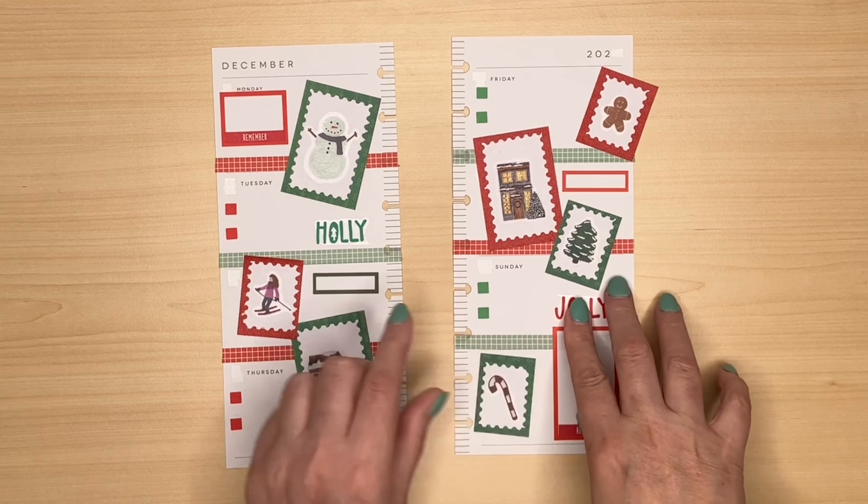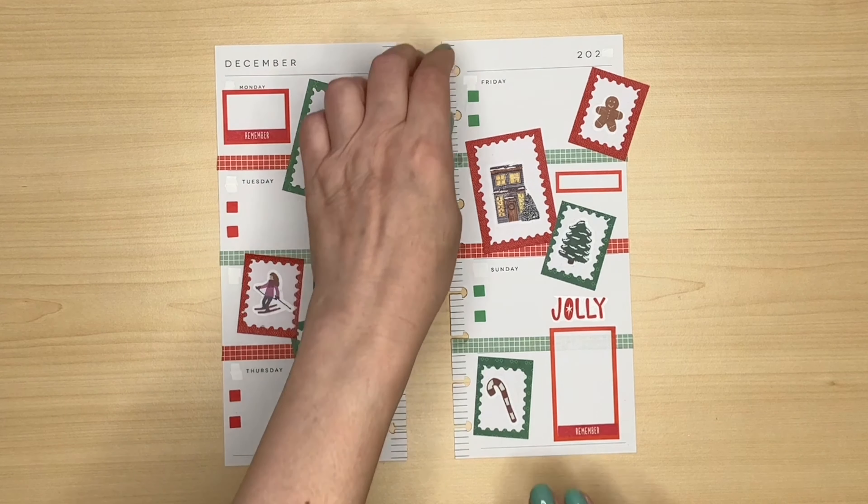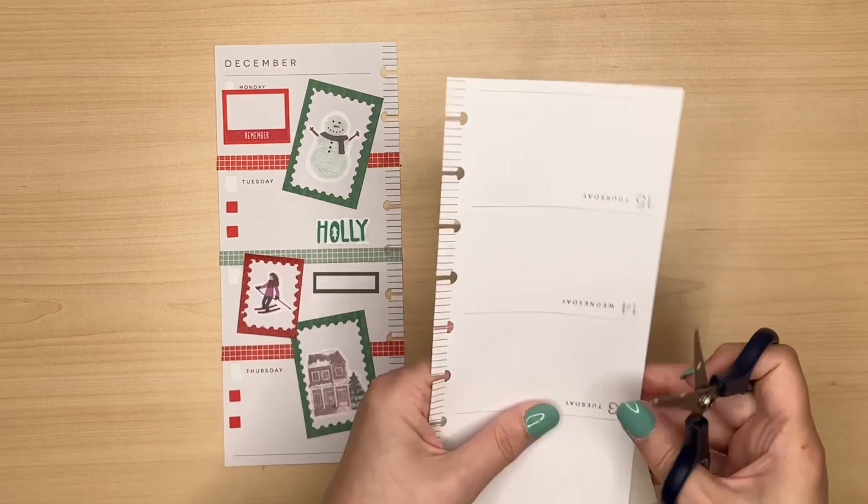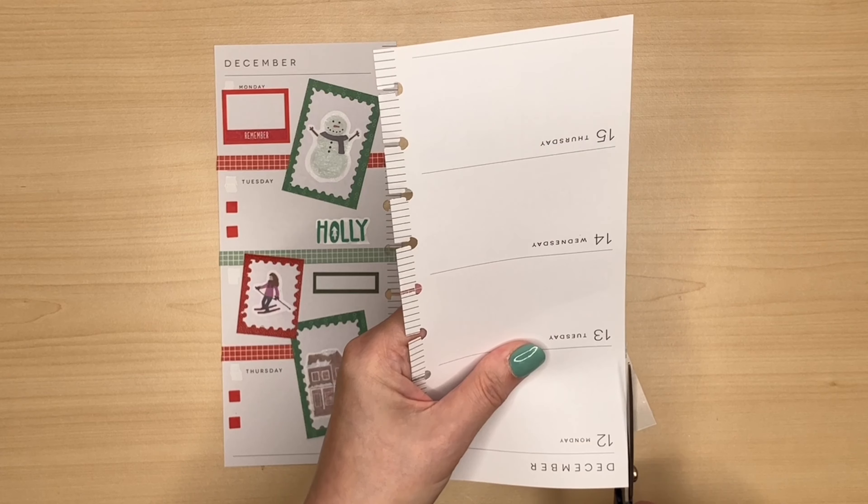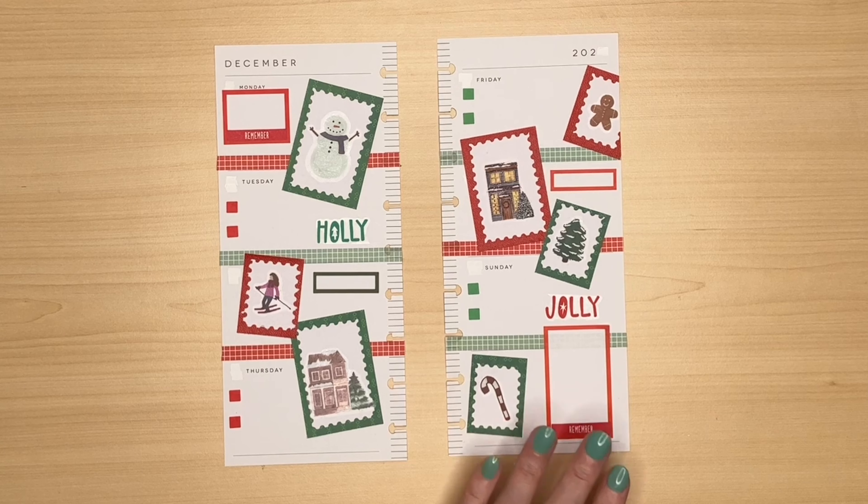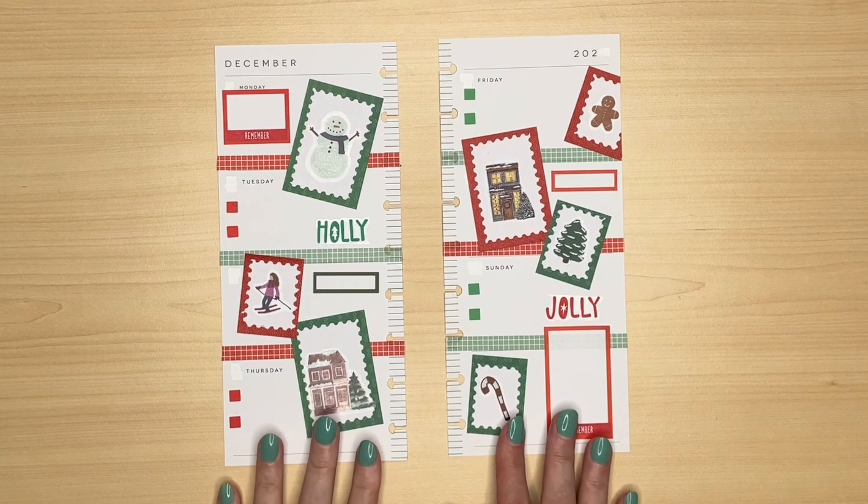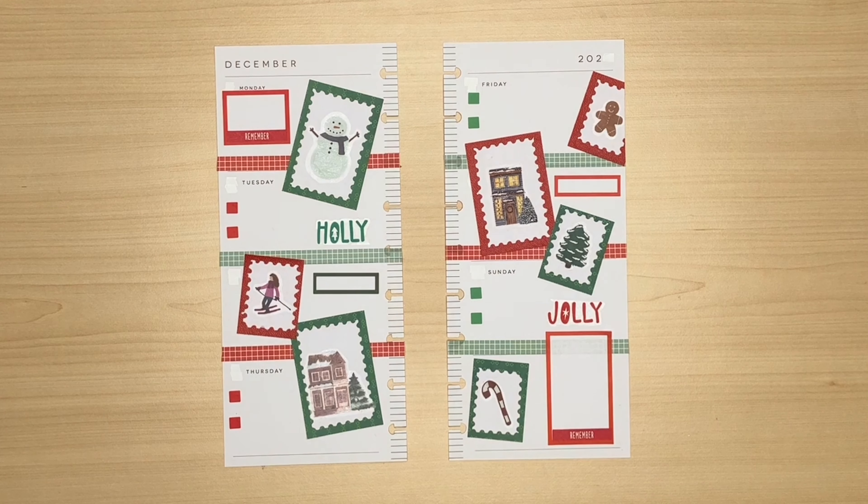I've decided to cut it into two because I think it would look better with one word on one page and one on the other. And I just need to trim off that gingerbread man sticker. And we are done.